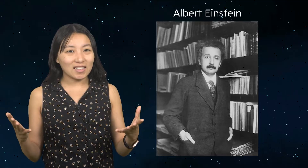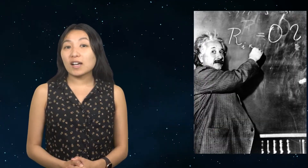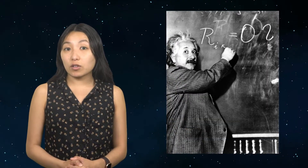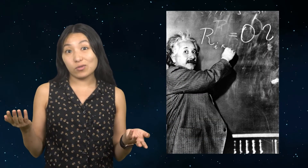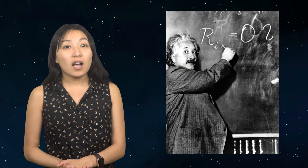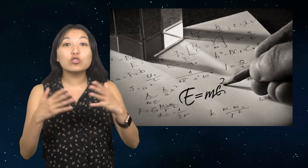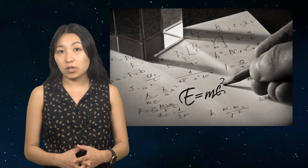Then, in 1915, Albert Einstein presented a revolutionary idea. His solution? To rethink gravity itself. When you're Einstein, rewriting the rules of the universe is just another Tuesday. Instead of modifying Newton's framework, Einstein built upon it, and in the process gave us an entirely new way to understand the cosmos.